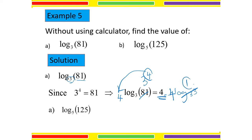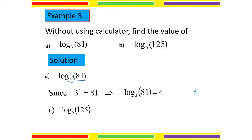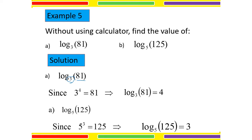For question B, we have base 5. Since 5 to the power of 3 gives 125, the answer will be 3.